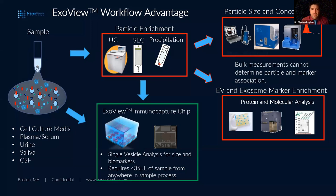The ExoView workflow advantage overall: when we have a sample — be it cell culture media, plasma, serum, urine — the sample laden with EVs, in most cases we start with a particle enrichment step. We go through some procedure to try and enrich those EVs or isolate them from the matrix in the whole sample, which could involve ultracentrifugation, size exclusion chromatography, or precipitation. All of those methodologies are compatible with ExoView.